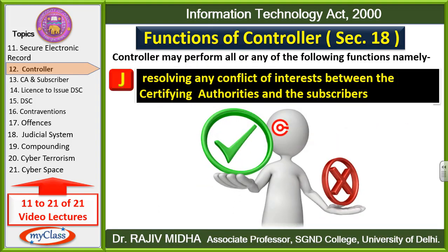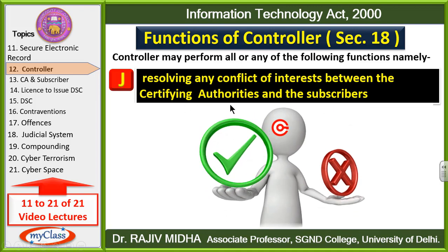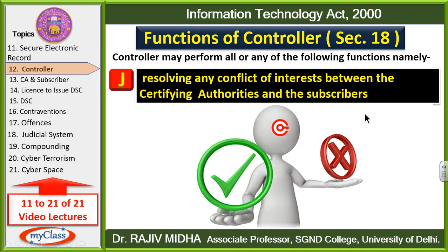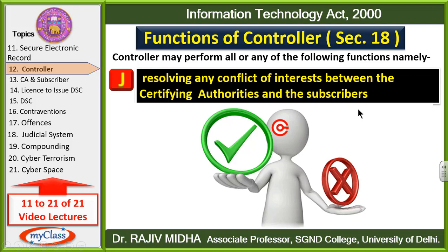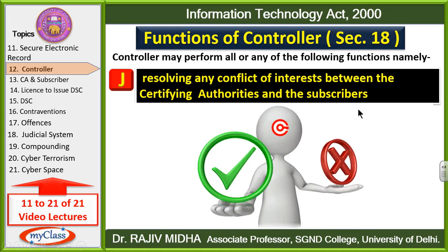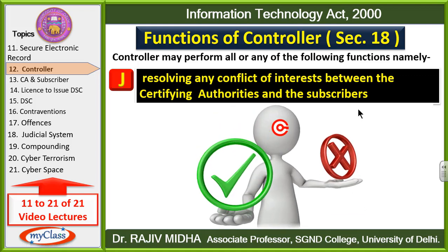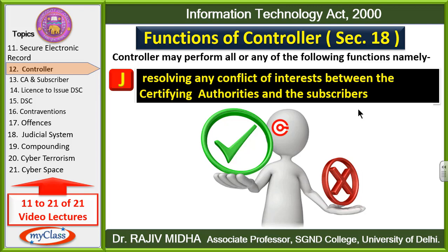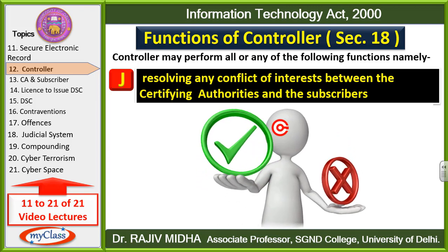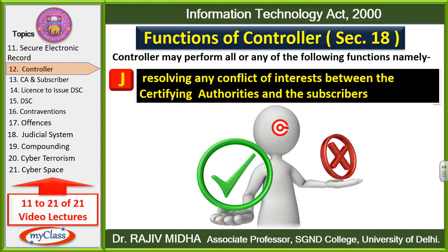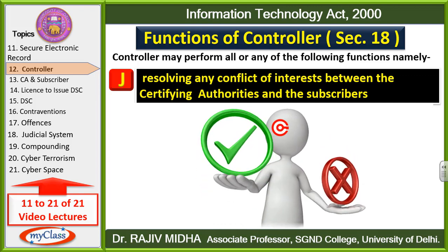J point: Resolving any conflict of interest between these certifying authorities and the subscriber. Agar certifying authorities aur subscriber ke andar kisi bhi prakar ka koi conflict ho jaata hai — to kaun in mein se theek hai ya kaun in mein se galat hai — in ke conflict ko resolve karne ki zimmedaari bhi controller par hi hai. So controller hi certifying authorities aur subscriber ke dispute ko resolve karega.